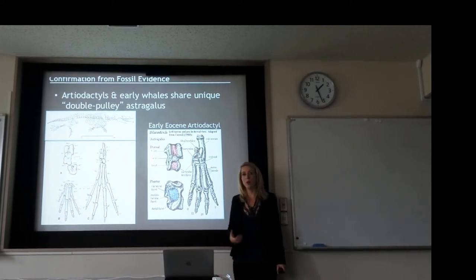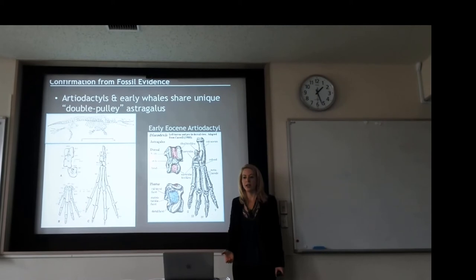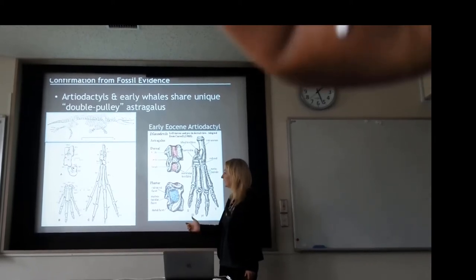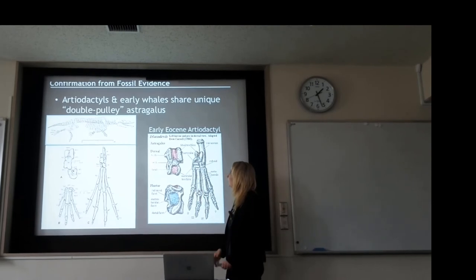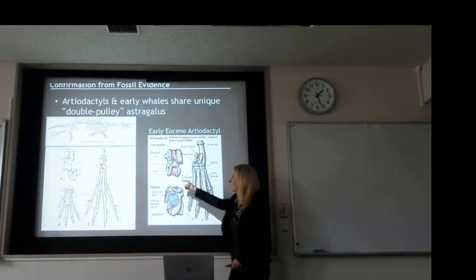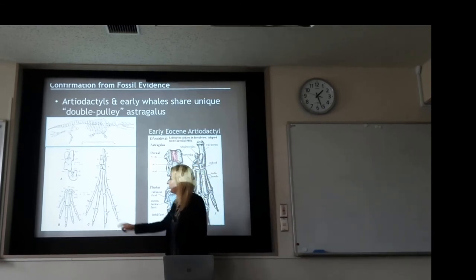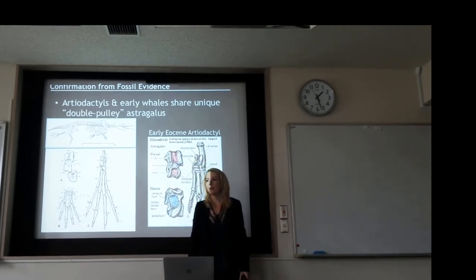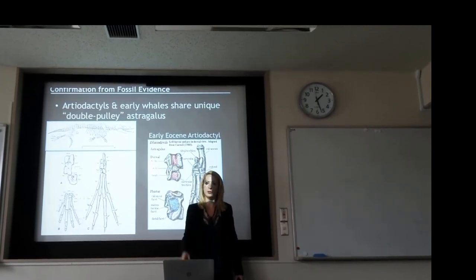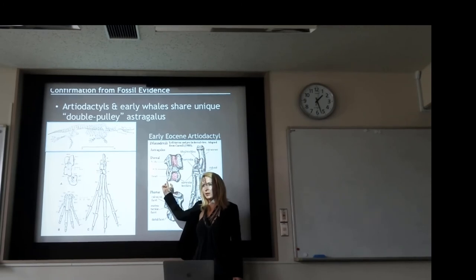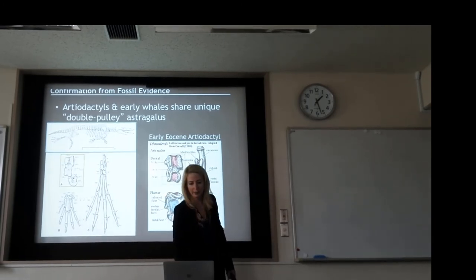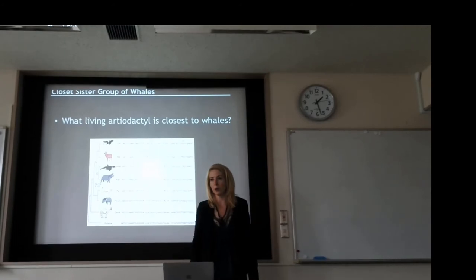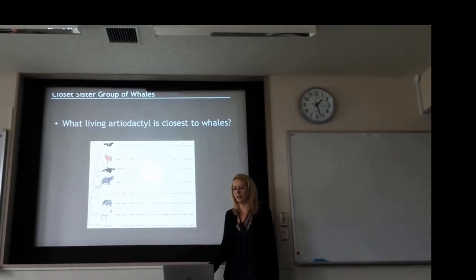The thought was that if whales are descended from artiodactyls, then those not yet fully adapted to sea life would have that double-pulleyed astragalus. It turns out that is the case — this fossil from an early Eocene artiodactyl clearly has this double-pulleyed astragalus. If you watch deer or gazelles jump, they can move so gracefully because of this double-pulleyed system in their ankle bones. So the double-pulleyed astragalus is the key defining character of artiodactyls, and whales are part of the artiodactyls — they're the cetacean artiodactyls, the whale lineage.